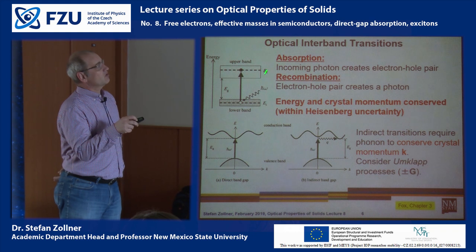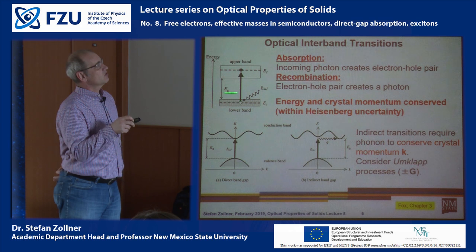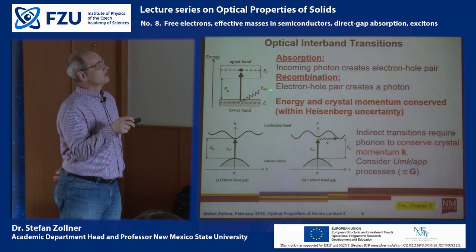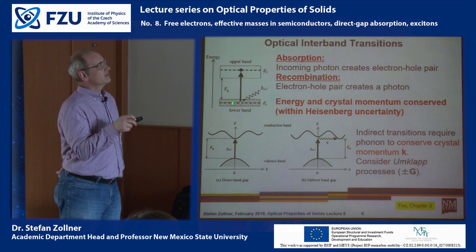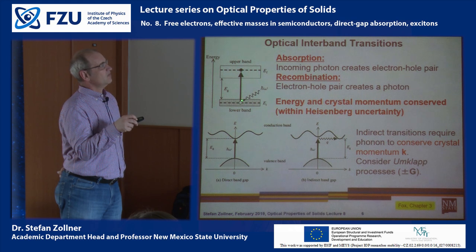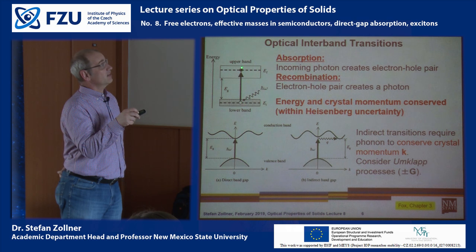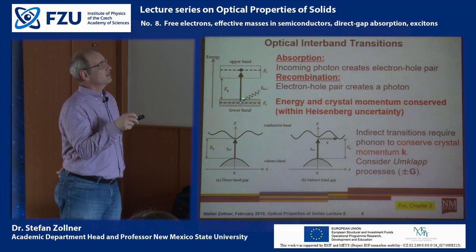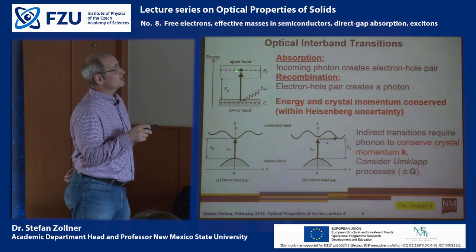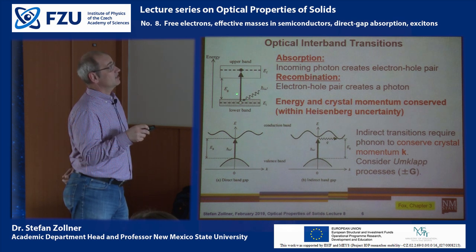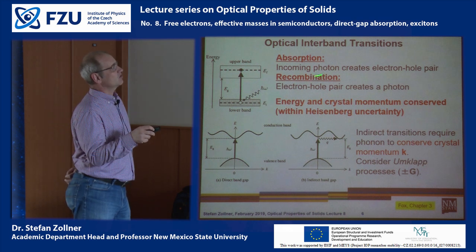For absorption: an incoming photon takes an electron from the ground state and lifts it into the excited state, leaving a missing electron — a hole — in the ground state. We now have an electron-hole pair. That is the absorption process. Subsequently, the excited electron jumps back down into the ground state, fills the hole, and emits a photon. This process is called recombination.